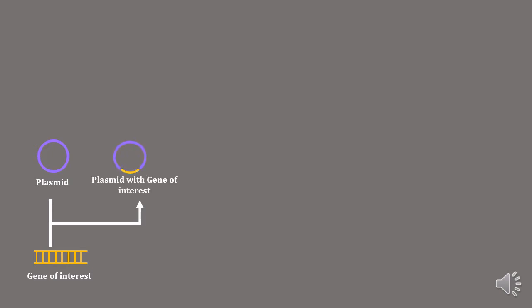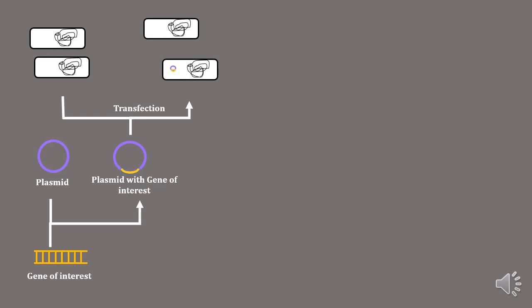This creates a recombinant plasmid with our gene of interest. We then transfect this recombinant plasmid into bacterial cells like E. coli to get transfected cells containing our plasmid. We then grow these cells.